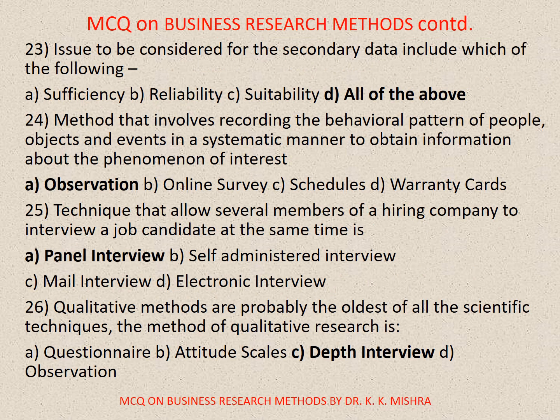Question number twenty-three. Issues to be considered for the secondary data include which of the following? Options are: A. Sufficiency, B. Reliability, C. Suitability, D. All of the above. Correct option is D. All of the above.